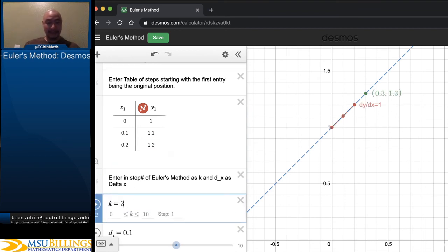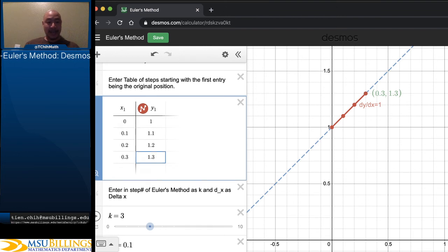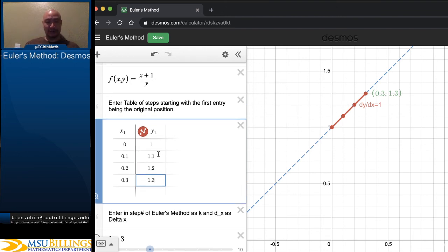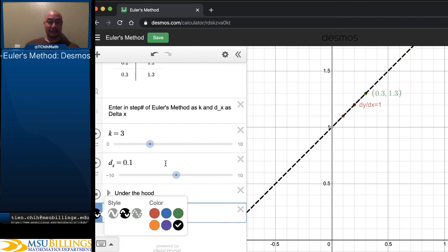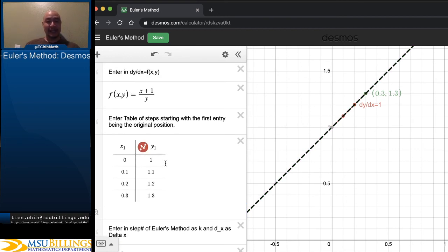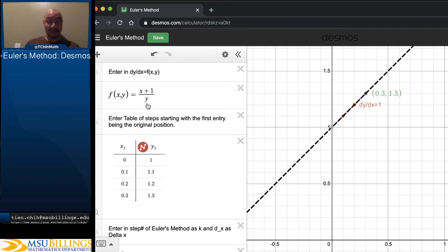At step 3, (0.3, 1.3), and it should not be too hard for us to check that y equals x plus 1 is in fact a perfectly good solution to this differential equation. You can check that. The derivative of y with respect to x is 1, and if y is x plus 1, then (x+1)/(x+1) is in fact 1.